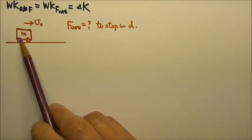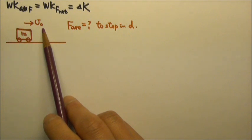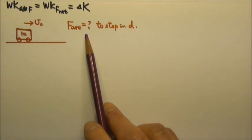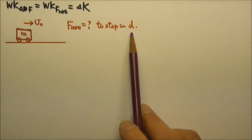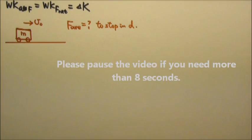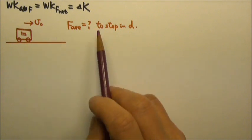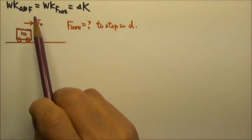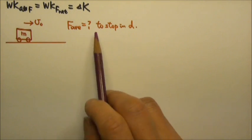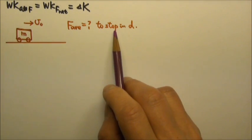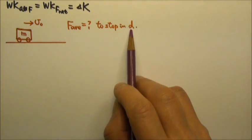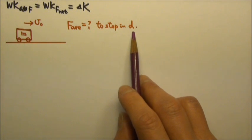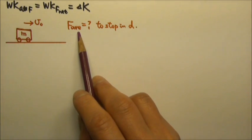For example, a cart with mass m travels to the right at speed v₀. What average force would it take to stop this cart in distance d? We can either use kinematics with forces or the work-energy theorem. Since we know the initial velocity, the final velocity is zero, and the displacement is d, we can use kinematics to find acceleration, then F = ma to find the force.